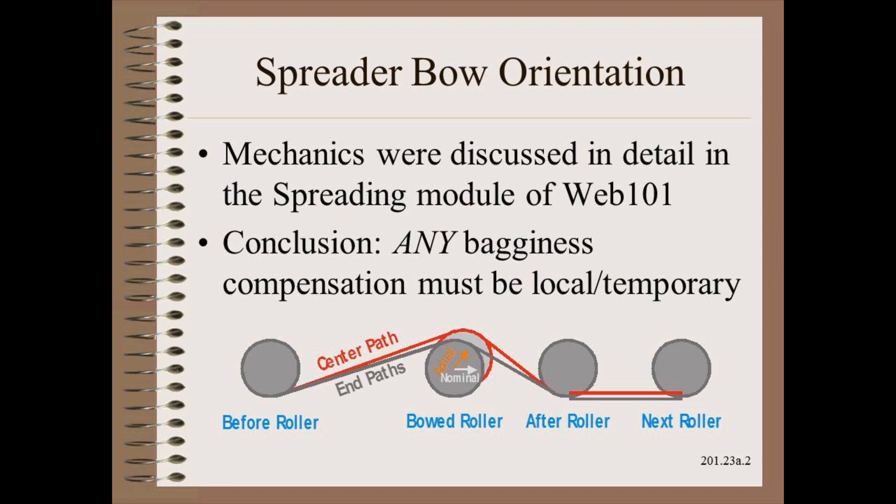In the spreading module of Web 101, we discussed in great detail the mechanics of bode roller and bode pipe spreading. Our conclusion there was that spreading is local and temporary. Furthermore, any bagginess compensation must be even more local and temporary. As we learned there, there is simply no place to store the excess length that is the essence of bagginess.